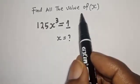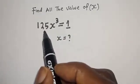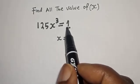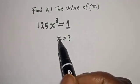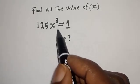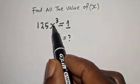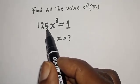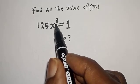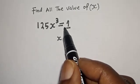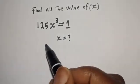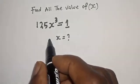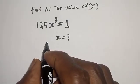Find all the values of s: 125 raised to power s cubed is equal to one. Hi everyone, welcome to my class. In this class we want to find the value of s from this equation: 125s raised to power 3 is equal to one. But before we proceed, please don't forget to like, share, comment and subscribe.